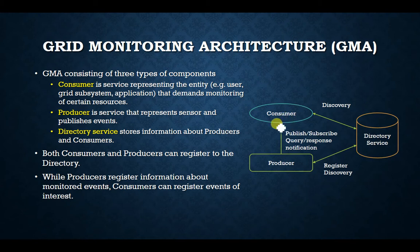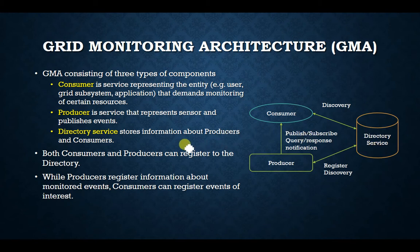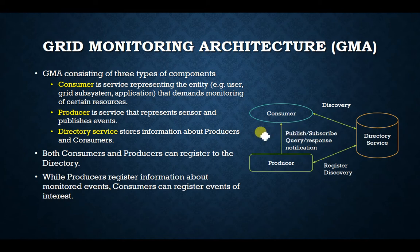The architecture has three different components that must be present: one is called consumer, the second is producer, and the third is directory services. These components will be explained briefly first, and then in detail — what work each does during the monitoring of the system.